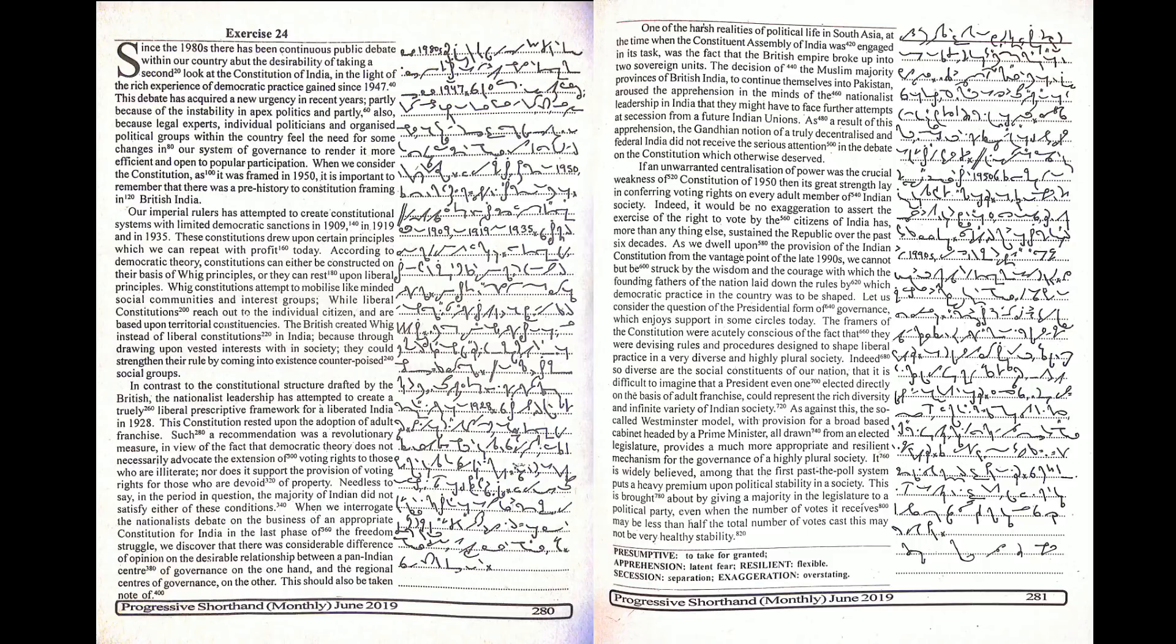One of the harsh realities of political life in South Asia at the time when the Constituent Assembly of India was engaged in its task was the fact that the British Empire broke up into two sovereign units. The decision of the Muslim majority provinces of British India to constitute themselves into Pakistan aroused the apprehension in the minds of the nationalist leadership in India that they might have to face further attempts at secession from a future Indian union. As a result of this apprehension,